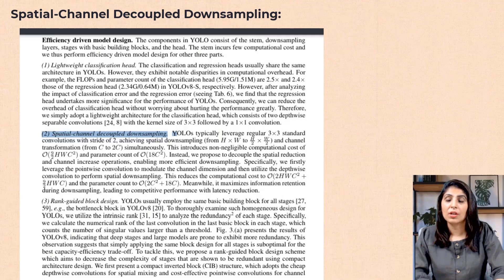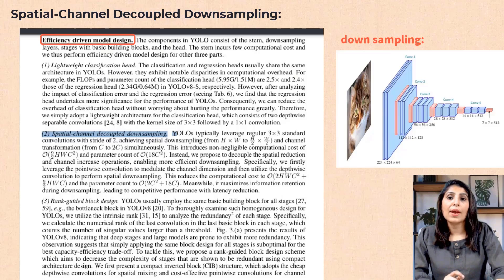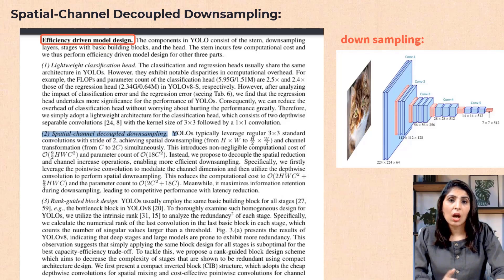Let's understand downsampling. Downsampling is a process in CNNs where the spatial dimensions — height and width — of the input are reduced while potentially increasing the depth, that is, the number of channels. In standard YOLO models, let's first discuss the current approach before talking about the proposed method.